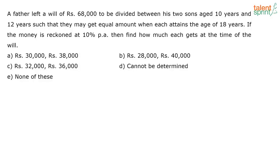The next question is there on your screen. This question was part of the daily test, so all those of you who have taken the daily test should be able to know how to solve it. A father left a will of rupees 68,000 to be divided between his two sons aged 10 years and 12 years, such that they may get equal amounts when each attains the age of 18 years, if the money is reckoned at 10% per annum. Find how much each gets at the time of his will. To solve this question, if you understand it, it is very easy.